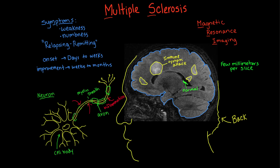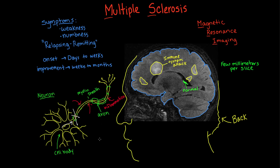How does the improvement happen — do we make more myelin over weeks to months? We think so. The body is able to put more myelin back on a lot of those axons that had it taken off. It's also possible that the nervous system can sometimes reroute information through different neurons if some neurons are lost — almost like taking a different highway if one is full of traffic, potentially sending information a different way entirely.